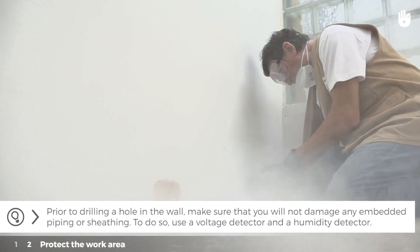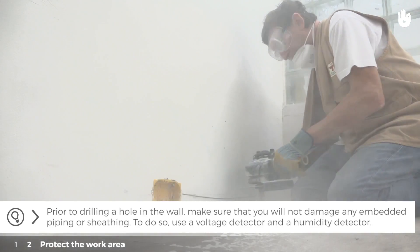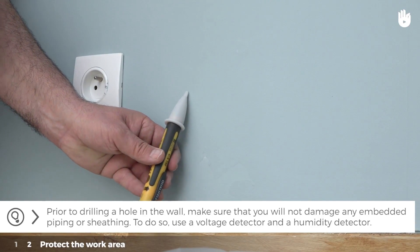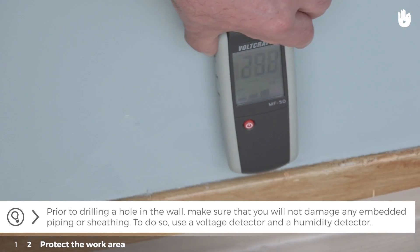Prior to drilling a hole in the wall, make sure that you will not damage any embedded piping or sheathing. To do so, use a voltage detector and humidity detector.